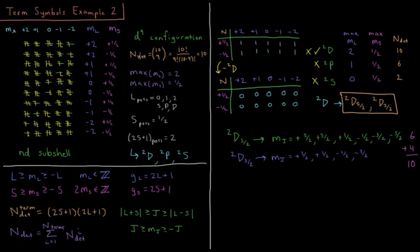The number of determinants — the number of distinct states — is the number of ways we can order 9 electrons in the 10 spin orbitals of a D subshell. For D, L equals 2, so 2L+1 equals 5, and with two spin values each, there are 10 total spin orbitals. So 10 choose 9 equals 10 factorial over 9 factorial times 1 factorial, which equals 10.